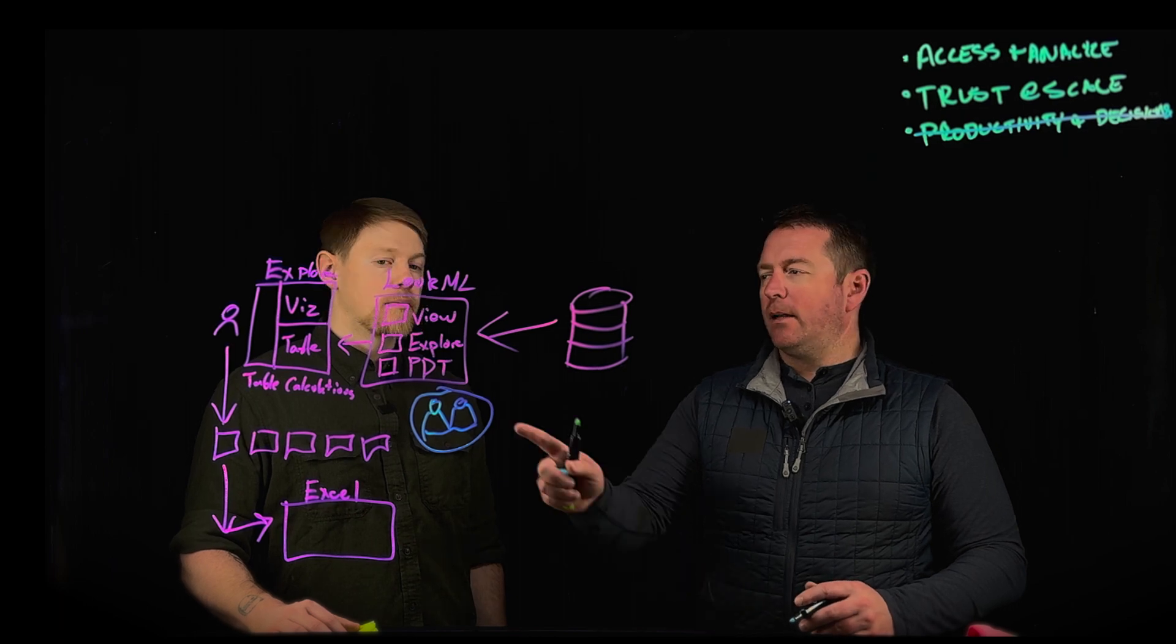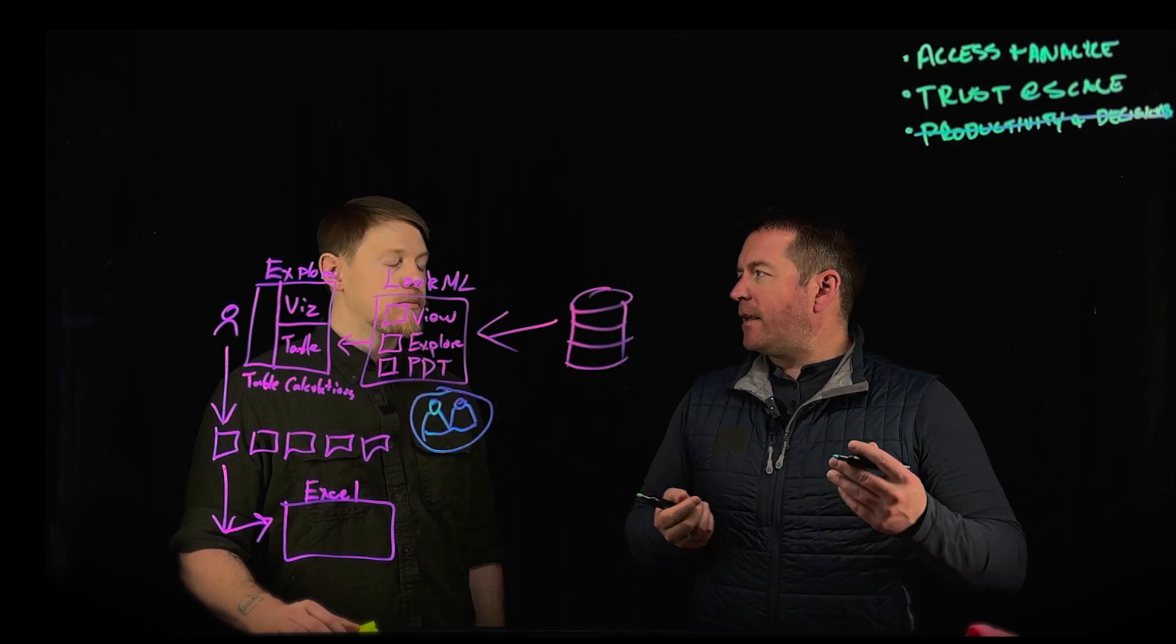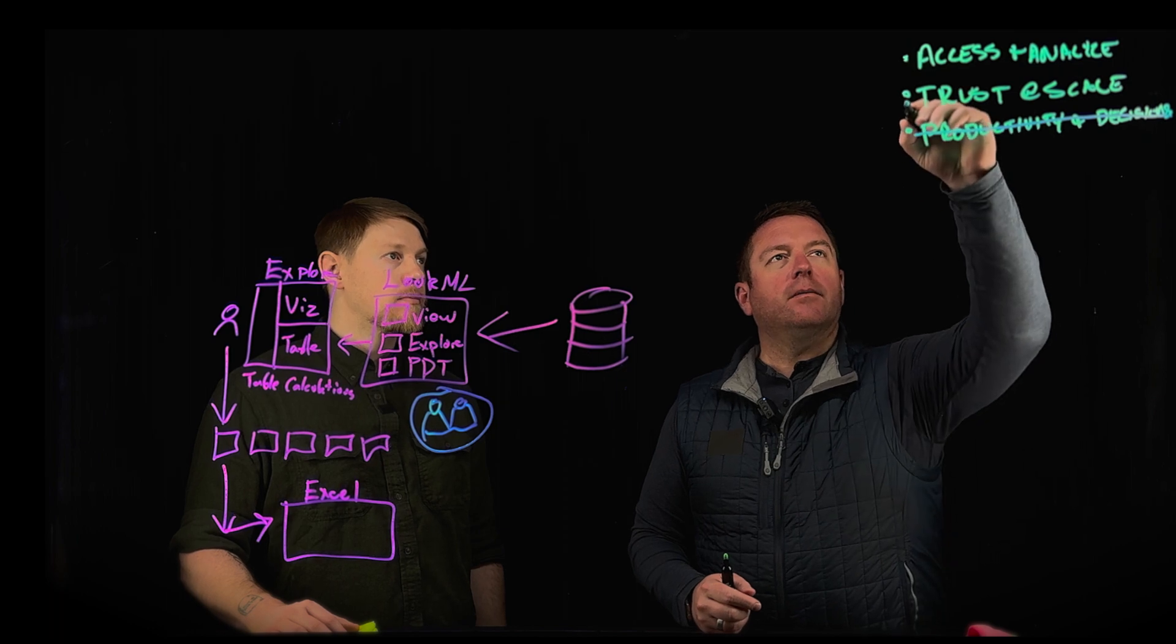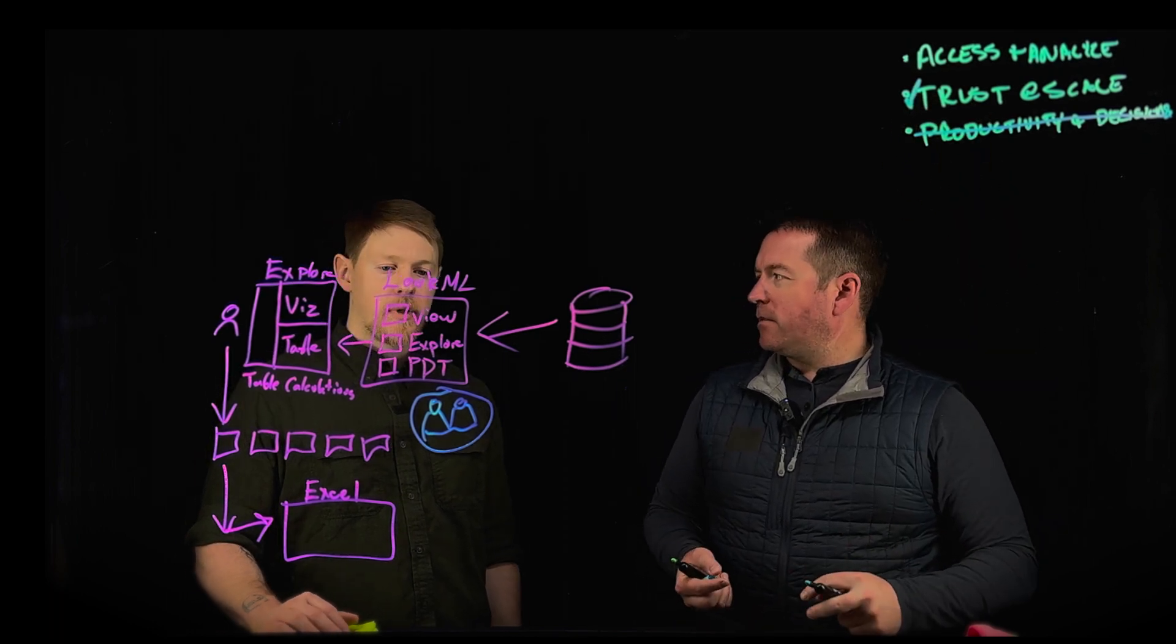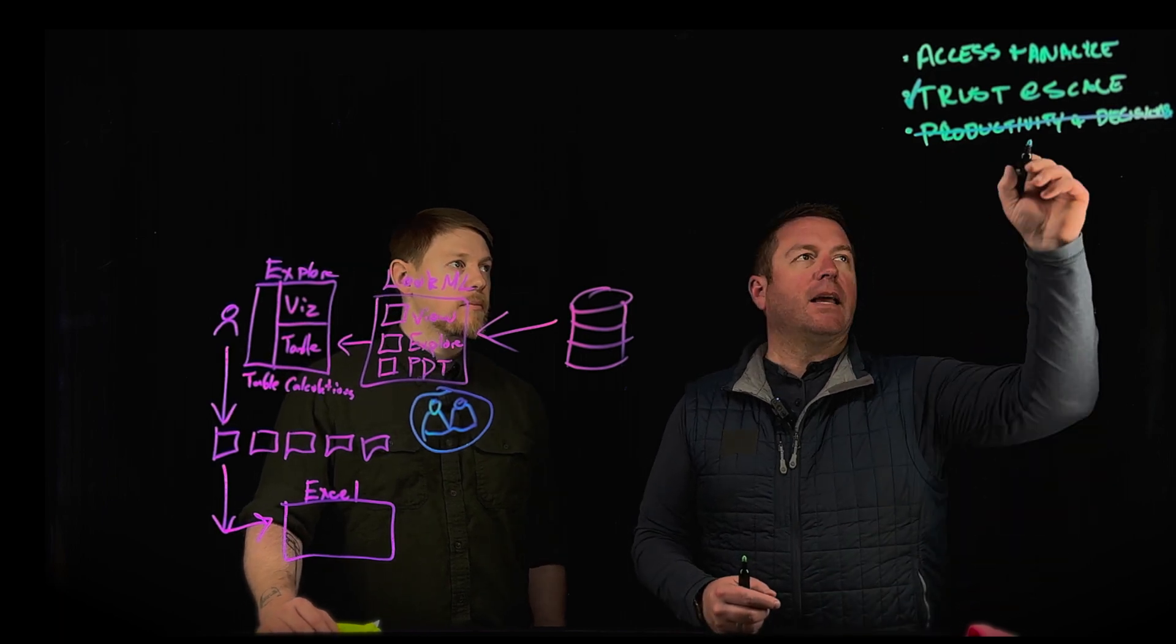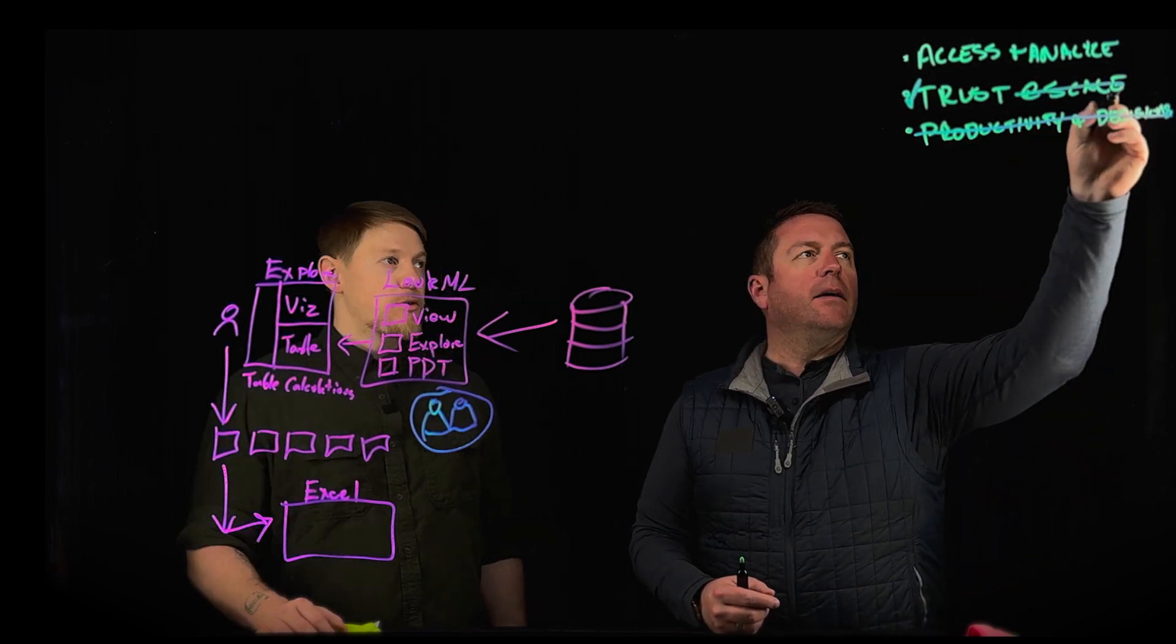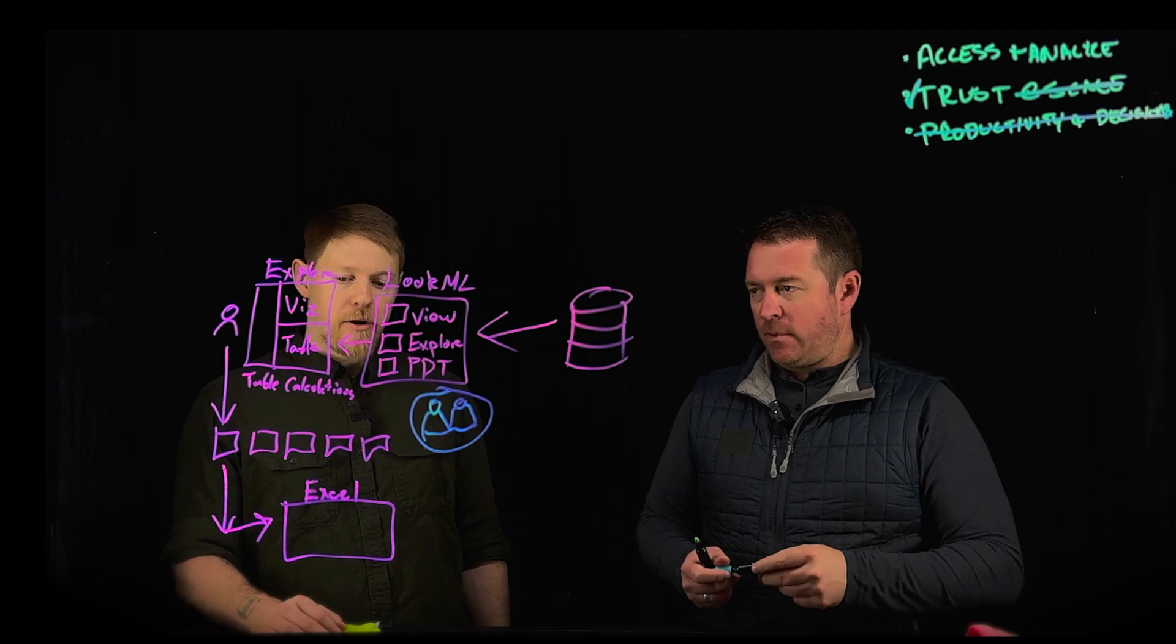I suppose that the end users do trust the data that they have access to. So I think it's probably a checkbox there because they have a nice semantic layer. Would you say that? Yeah. It's trustable. But, you know, the scale piece, I just can't understand how this would possibly scale. That's where things really break down. Okay.